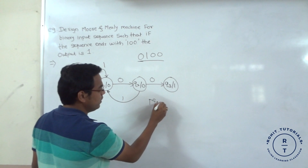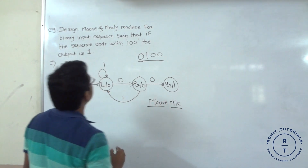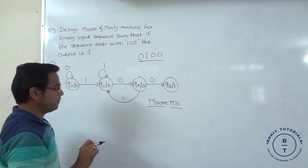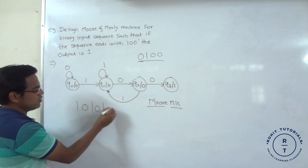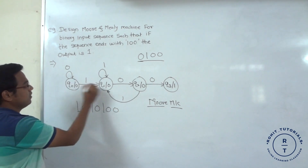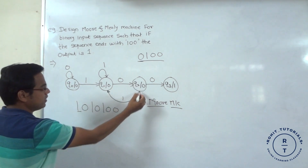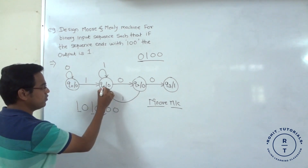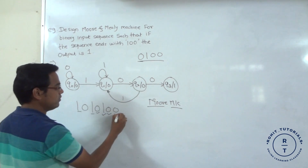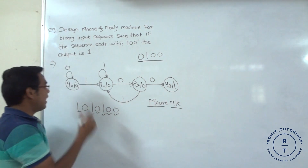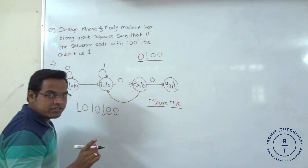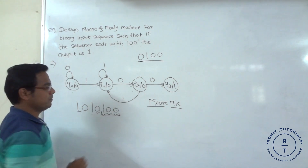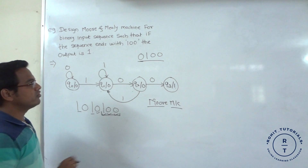This is the final Moore machine for the problem: binary input sequence such that if the sequence ends with 100, output is 1. For example, string 1010100: 1 goes to q1, 0 goes to q2, 1 goes to q1, 0 goes to q2, 1 goes to q1, 0 goes to q2, 0 goes to q3 — output is 1. At states q0, q1, q2 output is 0, but at q3 output is 1, because it has reached the sequence ending in 100. This is the final Moore machine for the given statement.